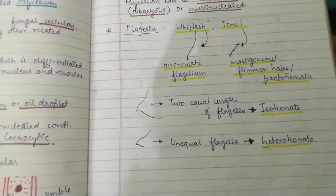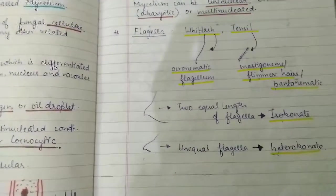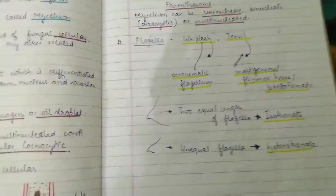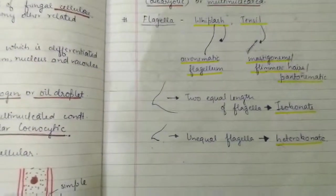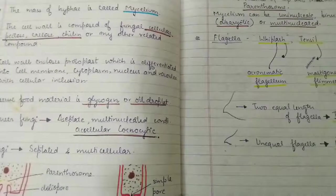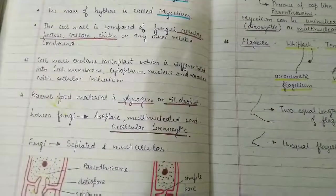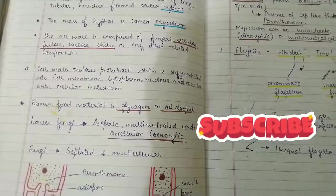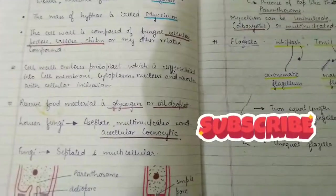Fungi flagella also have the standard nine plus two microfibril filament arrangement. This concludes the somatic or vegetative structure of the fungi plant body. I hope you liked the video — please subscribe, like, share, and comment. Thank you.